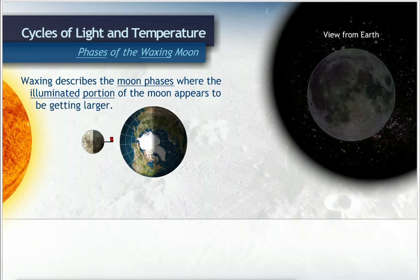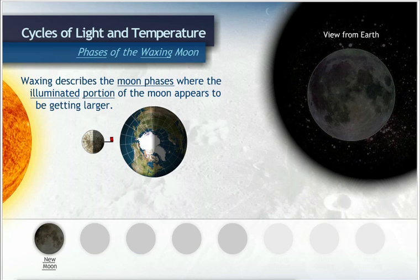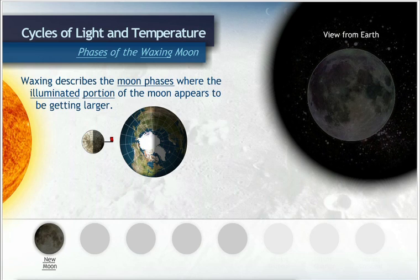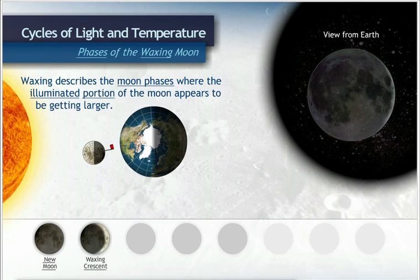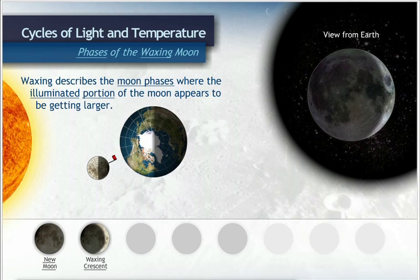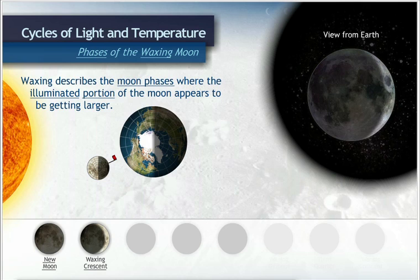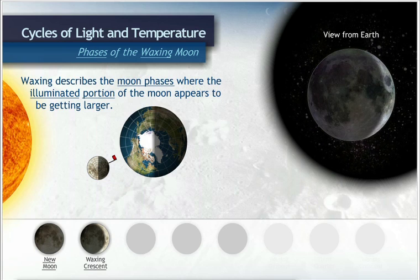There are three phases between a new moon and the full moon. The first phase after a new moon is called waxing crescent. During this phase, we can see less than half of the surface of the moon that faces the Earth.